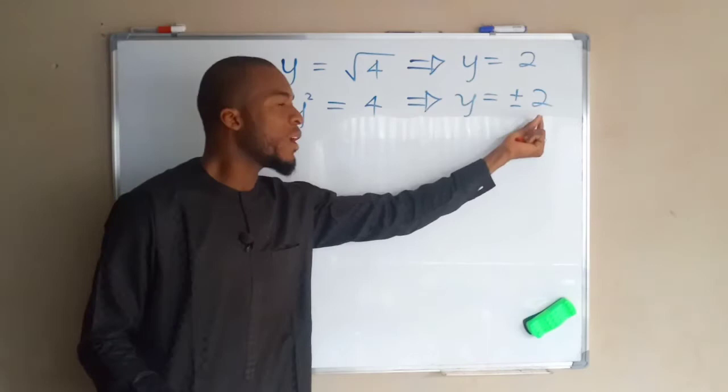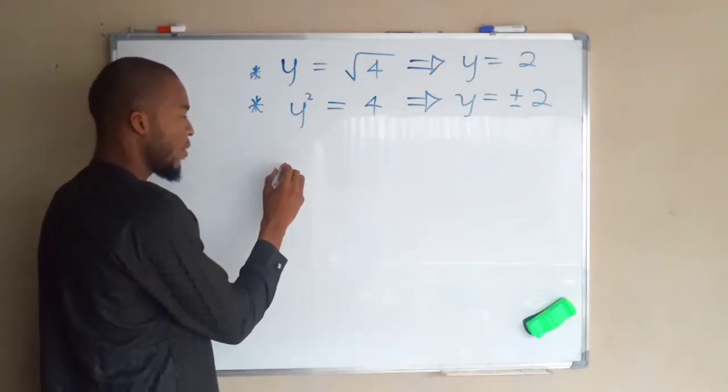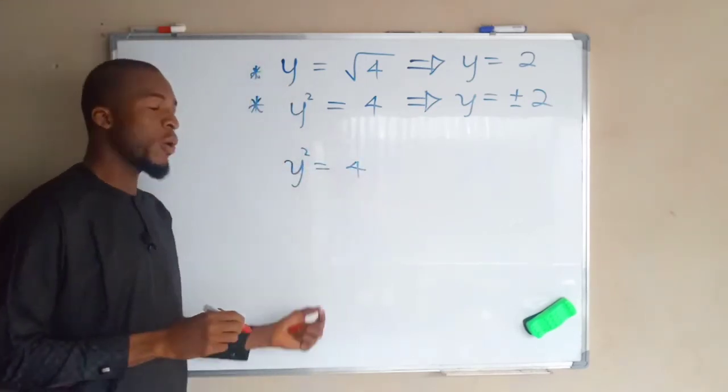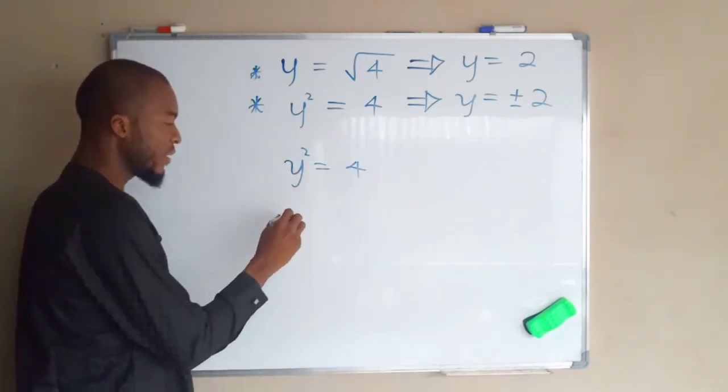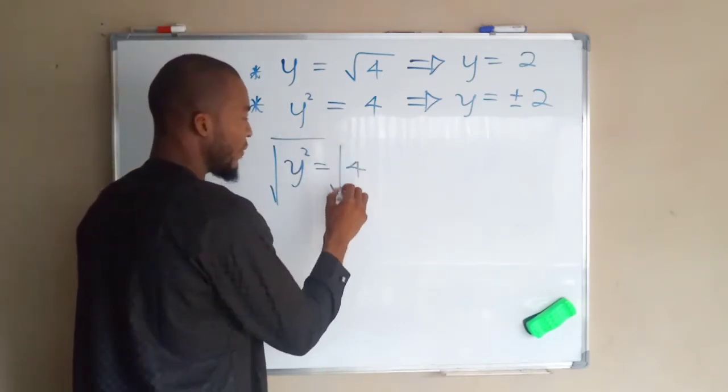But let us prove the second one. Why do we have plus or minus here? I told you if y squared equals four, now we are going to take the square root of both sides.